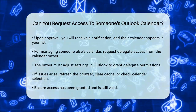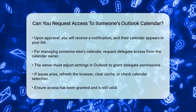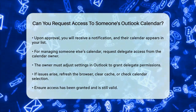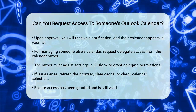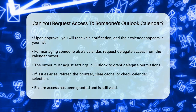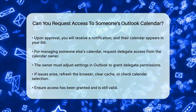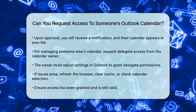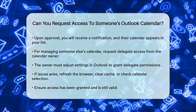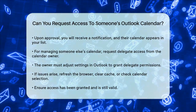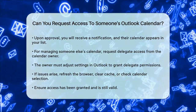In summary, requesting access to someone's Outlook calendar is a straightforward process that involves sending a sharing request and waiting for the calendar owner to approve it. By following these steps, you can easily view and manage calendars within your organization, making it easier to schedule meetings and stay coordinated.